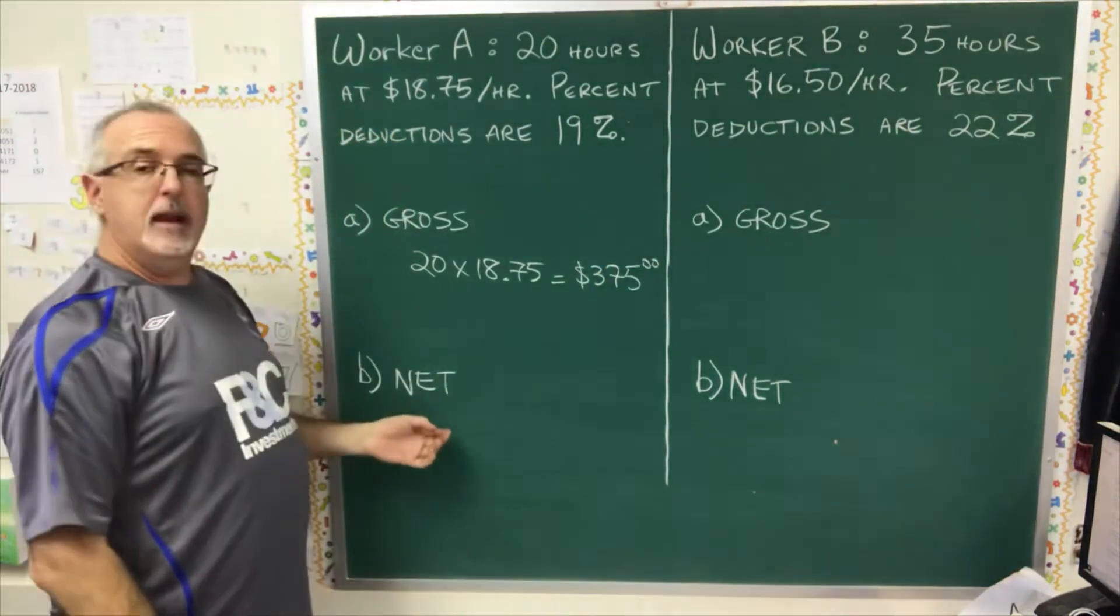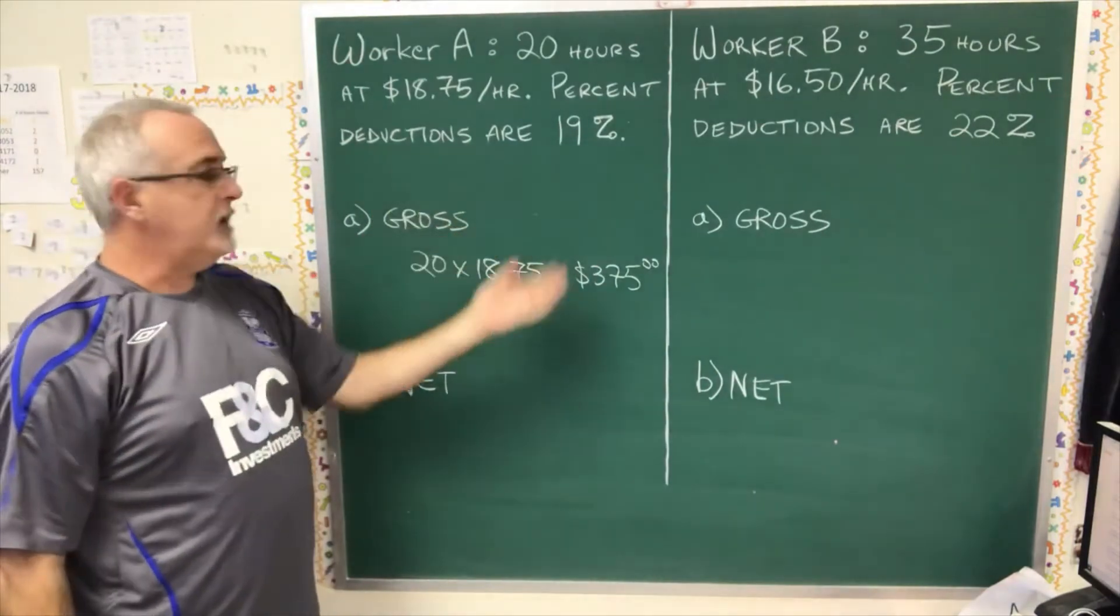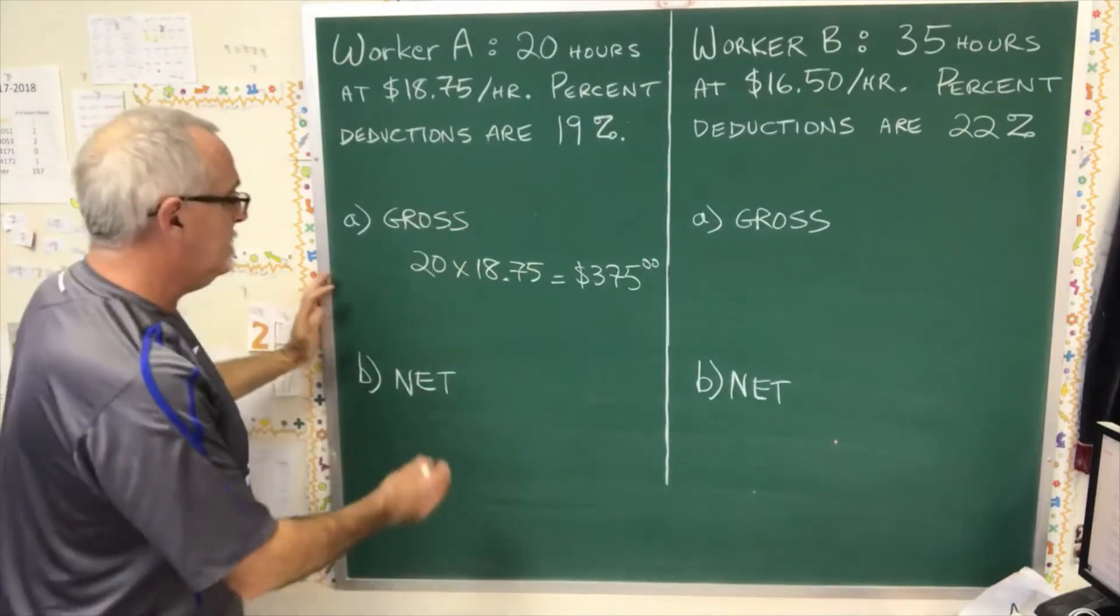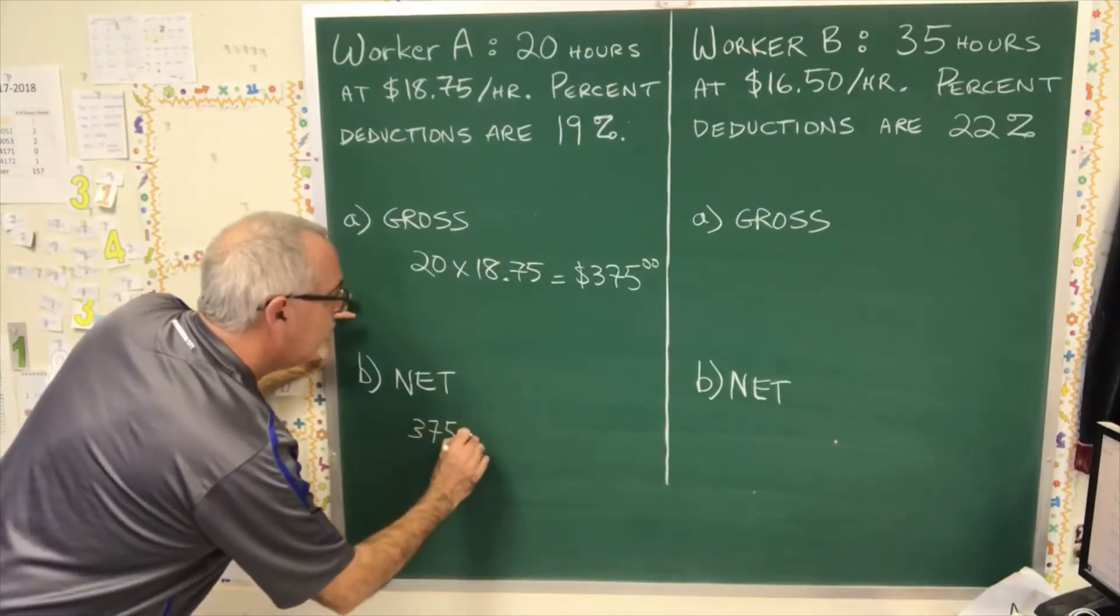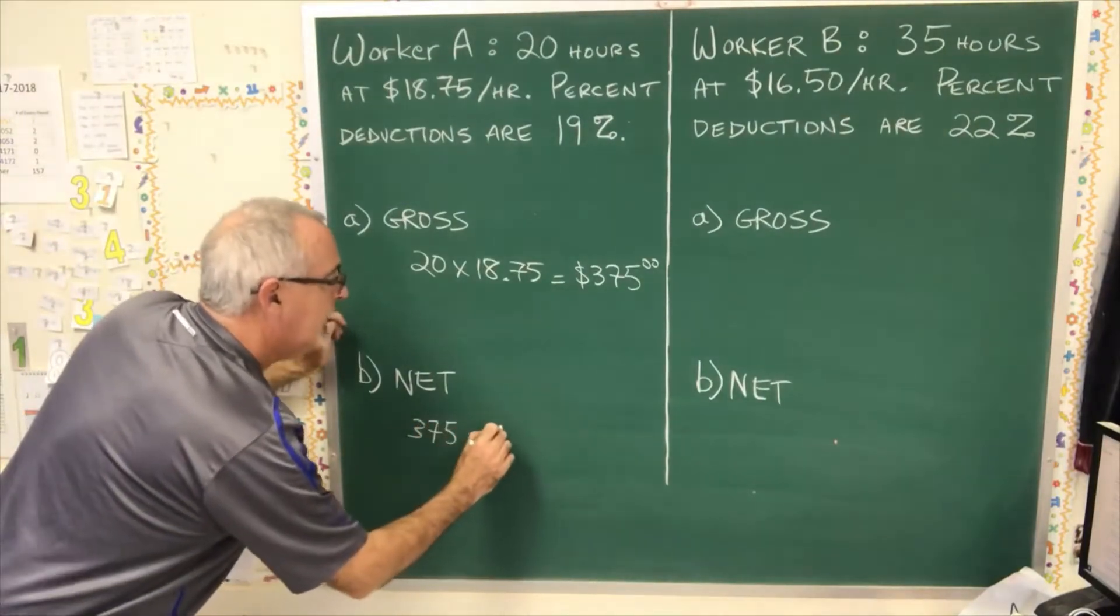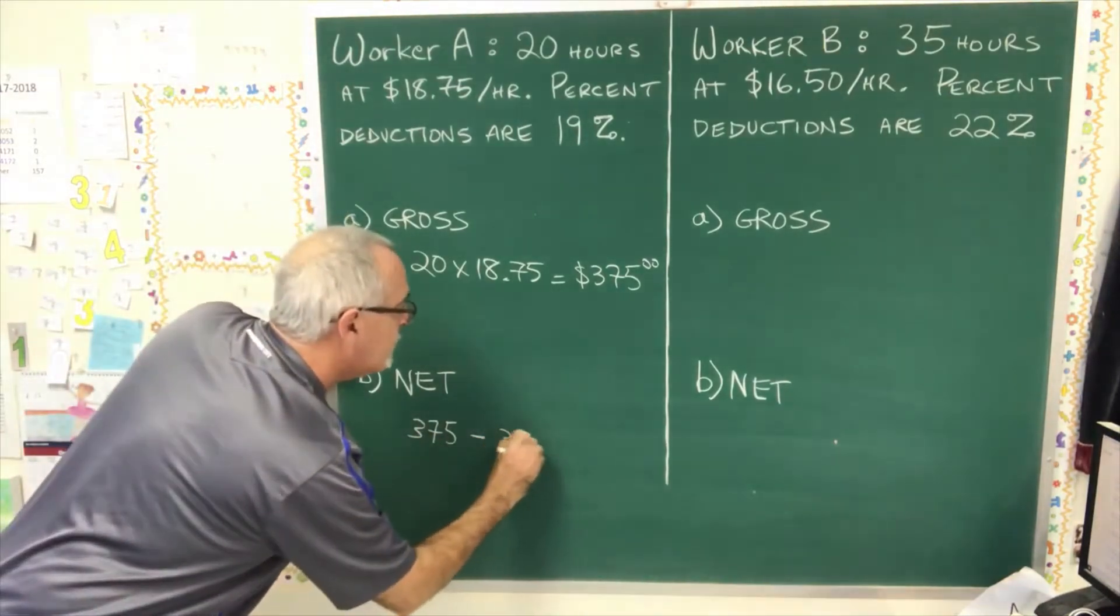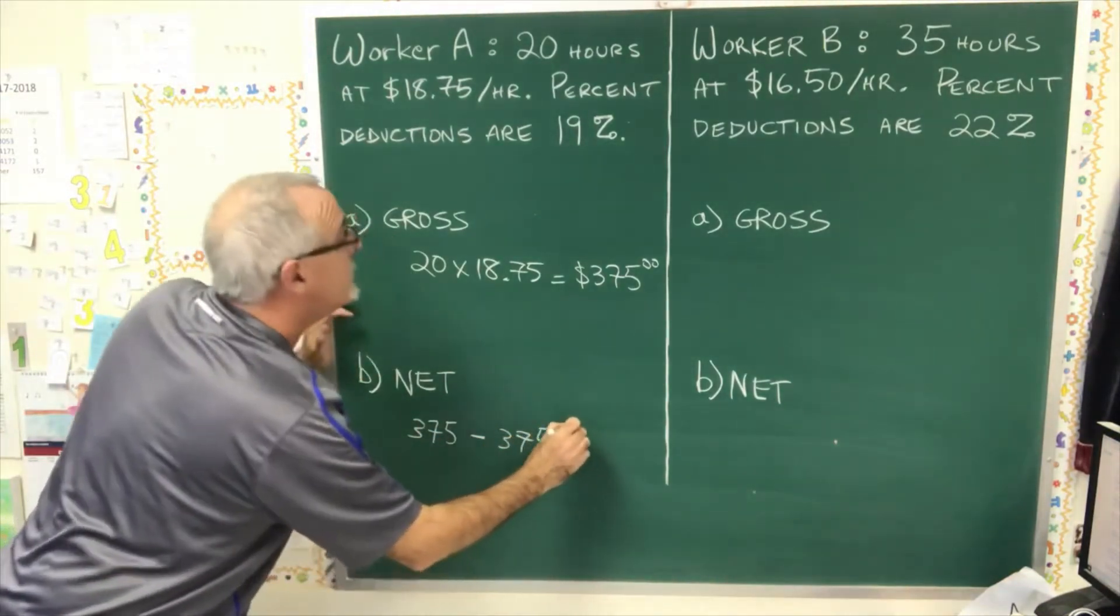Now to calculate the net pay, we have to deduct 19% of this. So what we're doing is, we're taking the $375 and we're subtracting the answer we get when we multiply $375 by 19%.